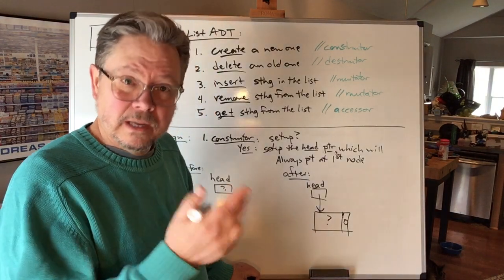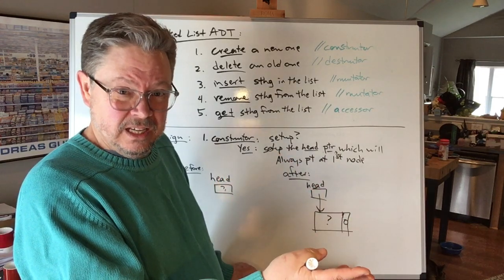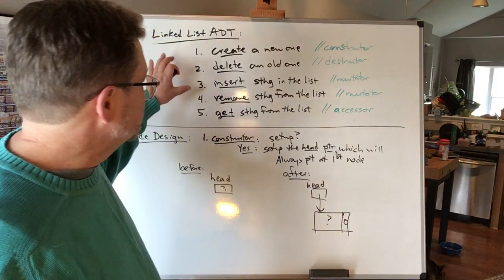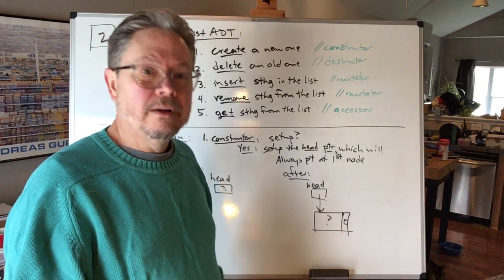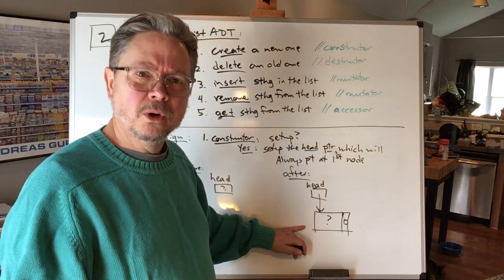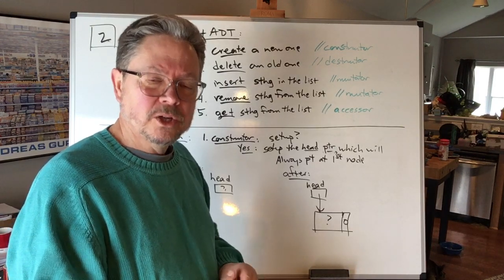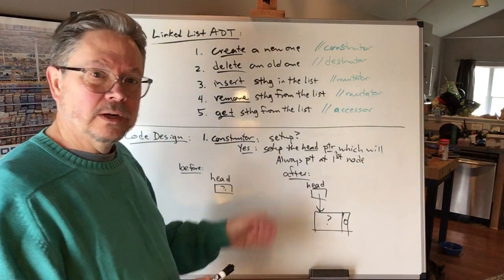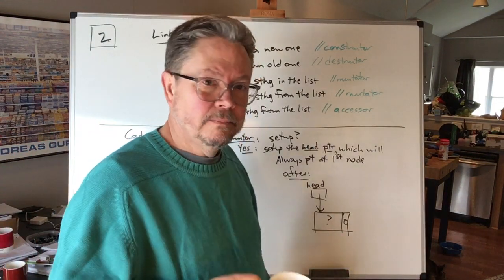This approach finesses away the boundary condition of an empty list. From the moment the constructor finishes, the list will never be empty — it always has at least one node, even if that node holds garbage. It seems illogical, but it eliminates the need to check for an empty list in every other operation. That's where we'll pick up in the next video — see you online.